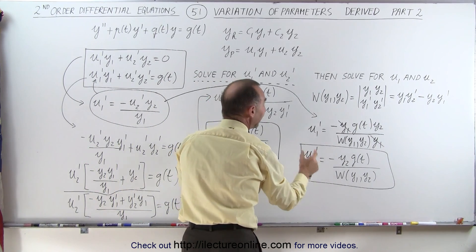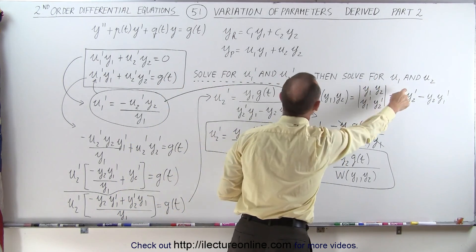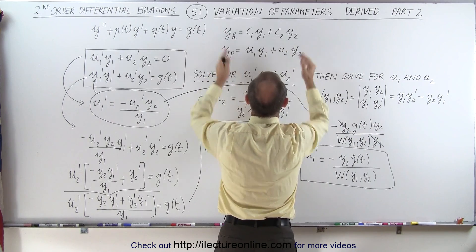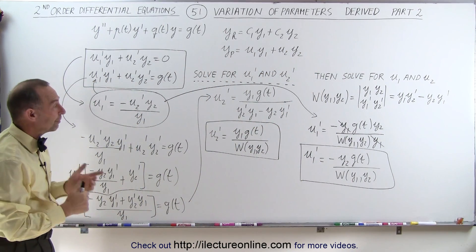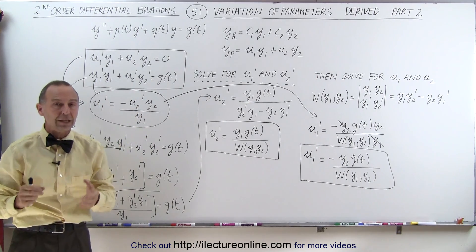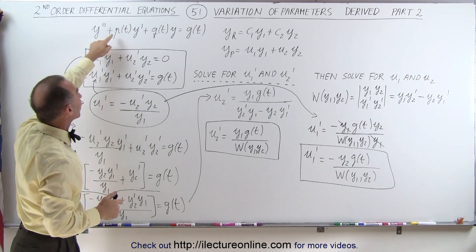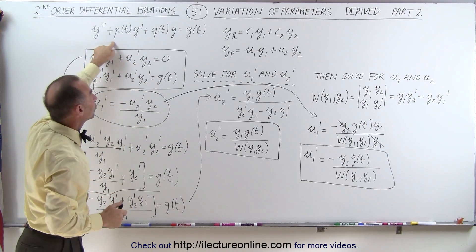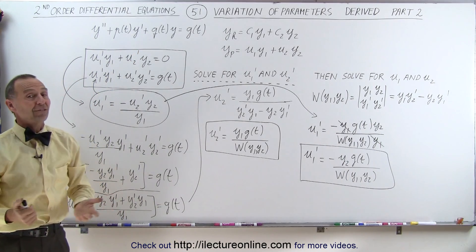And then we're going to take those two equations to solve for u1 and u2, which then tells us what the particular solution looks like. So we're getting closer. One more video, I think, and we can show you how to come to the final solution of how to find the particular solution of a non-homogeneous differential equation with non-constant coefficients using the method of variation of parameters. That's how it's done.